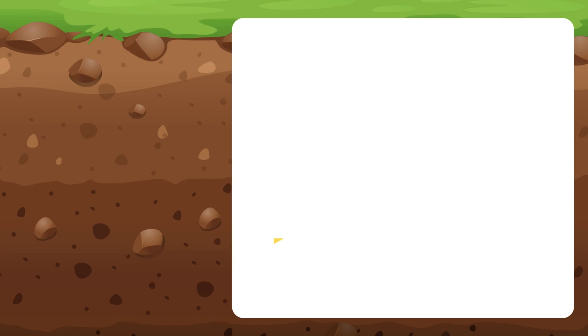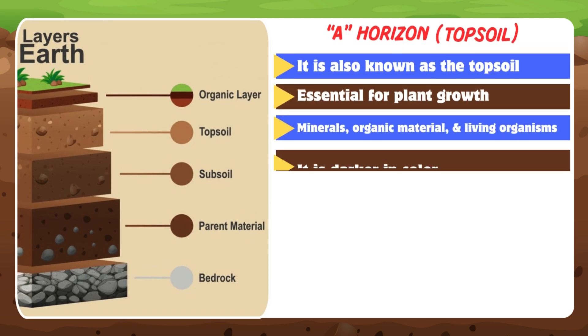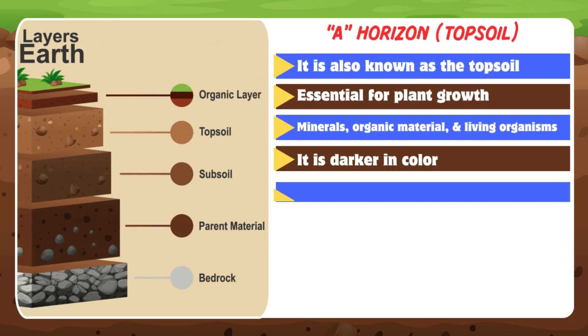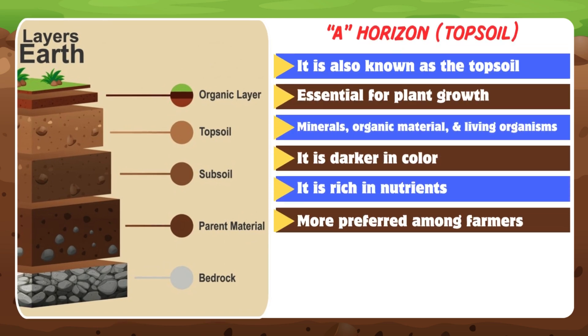A horizon — it is also known as the topsoil layer of cultivated land. This layer is essential for plant growth and contains a mix of minerals, organic material, and living organisms. It is often darker in color due to the accumulation of organic matter, is rich in nutrients, and for this reason is more preferred among farmers.